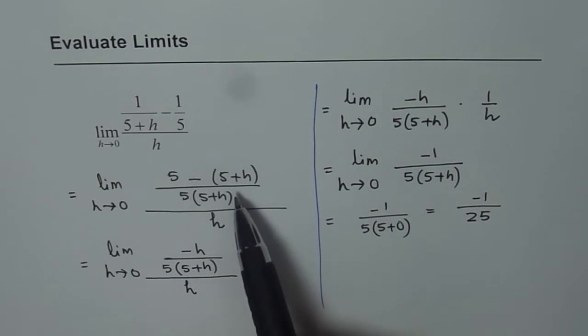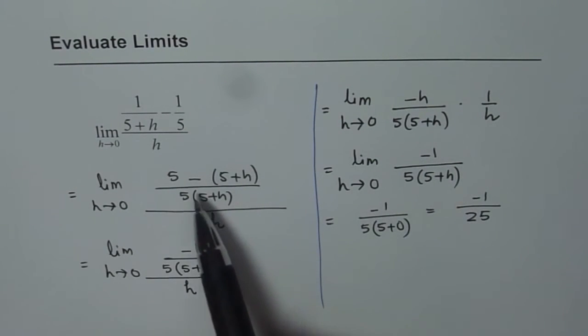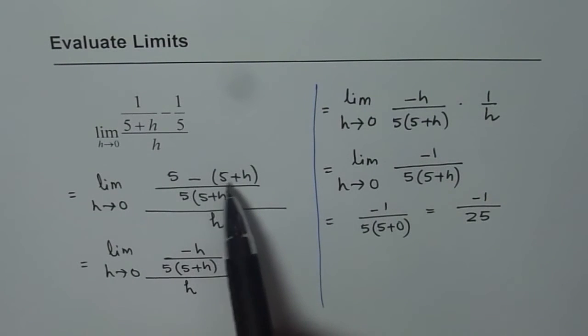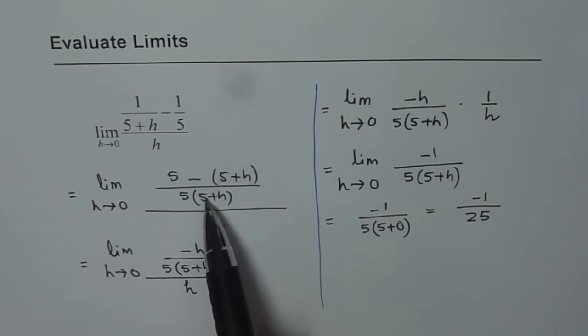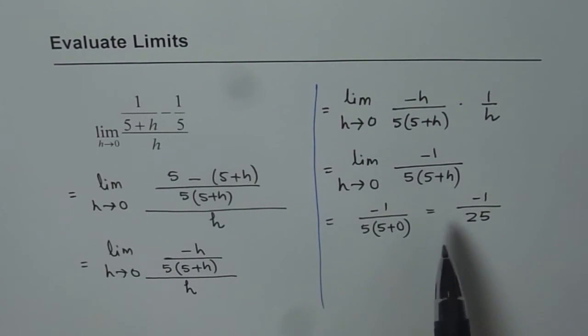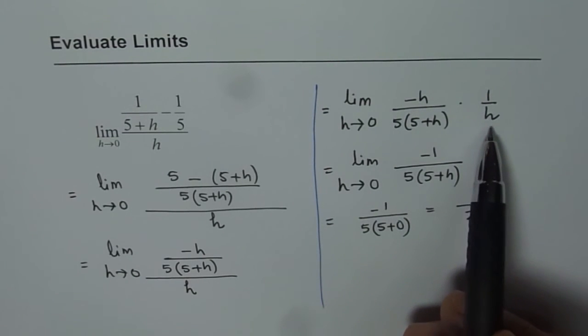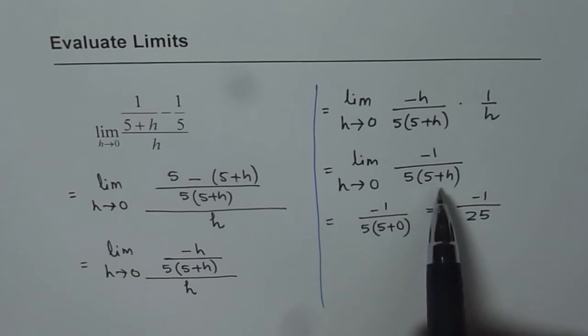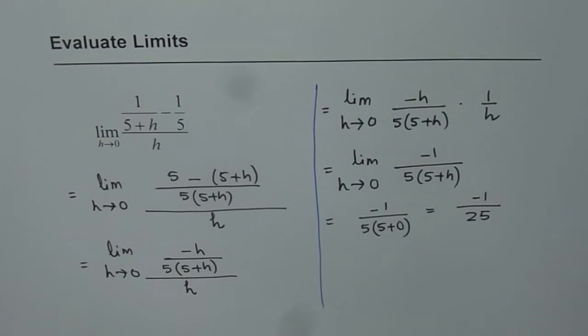At this stage also, you can write 5 minus (5+h) in the numerator and combine in the denominator. Either way, you can simplify and get the answer. Once you get rid of h from both numerator and denominator, you can substitute h equals 0 and find the answer. I hope that helps. Thank you.